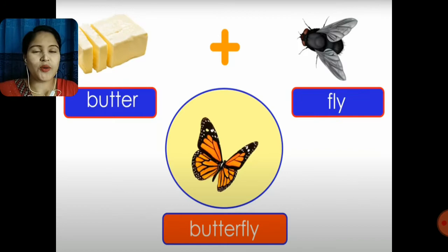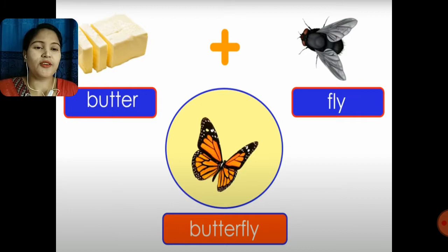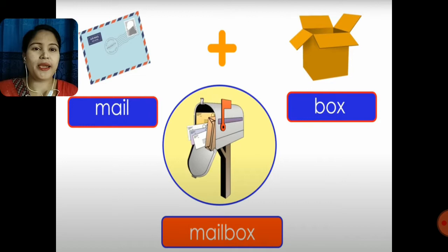So let's practice. First picture — you already know this one. 'Butter' plus 'fly' — if we join these two words together we find 'butterfly'. Same way, 'mail' plus 'box' gives us 'mailbox'.